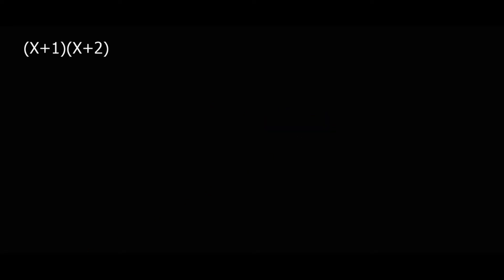Now we will share two methods. The first method: this means we multiply this term times these terms, and then this term times those terms — so this means we multiply everything.